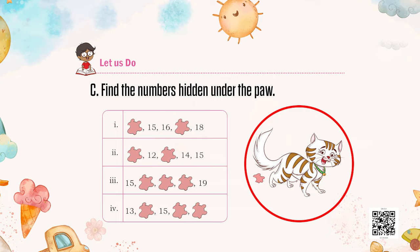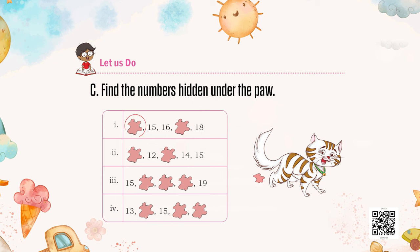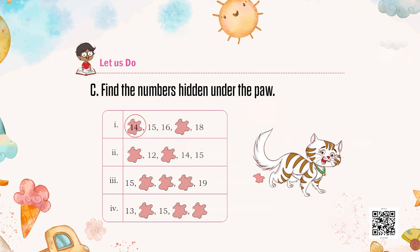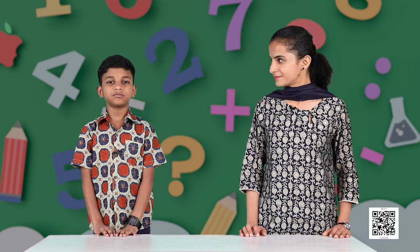For the next task, can you see an animal here? I see a cat. This cat has stepped on some numbers which were written in sequence, and those numbers are now hidden. Let us find the hidden numbers. In the first part, the first number is hidden, then 15 is written — so what comes before 15? 14. We complete the sequence: 14, 15, 16, and after 16 comes 17. Let us look at the next group — the remaining parts are for our friends.